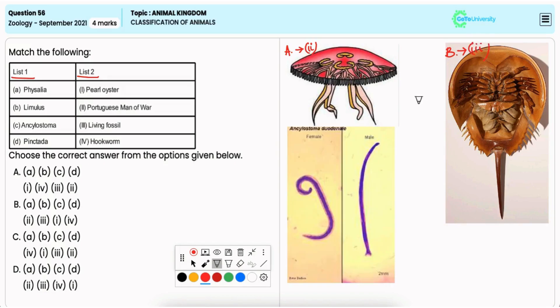Ancylostoma, a hookworm, belongs to the phylum Aschelminthes. Thus C matches with 4. Pinctada,